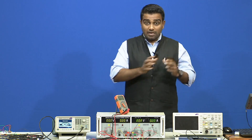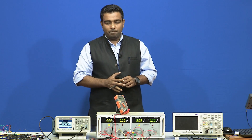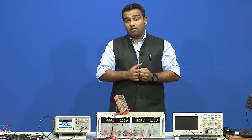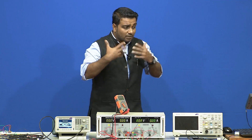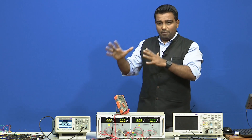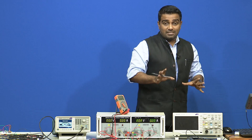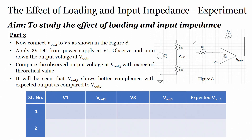Welcome back. In the last module we saw the effect of loading — we connected the potential divider to the inverting amplifier and found that the expected output was different from the experimental output. Now let us see what happens if we connect the potential divider to a non-inverting amplifier, and whether we still observe the loading effect. This is part three of the same aim: to study the effect of loading.